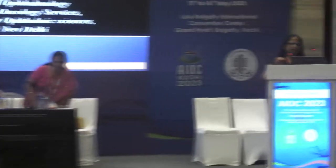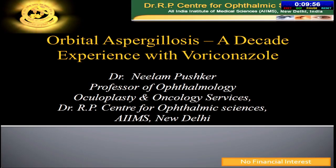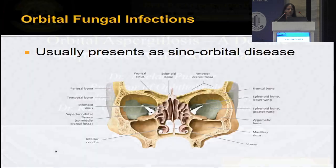One important addition before the next speaker: retinoblastoma patients can sometimes present with an acute orbital cellulitis. We should always do an ultrasound for intraocular tumor in a child presenting with orbital cellulitis — it might just be retinoblastoma presenting with aseptic orbital cellulitis. I now request Dr. Neelam Pushkar ma'am, professor of ophthalmology and renowned oculoplastic surgeon at RP Centre, to speak on orbital aspergillosis — a decade experience with voriconazole.